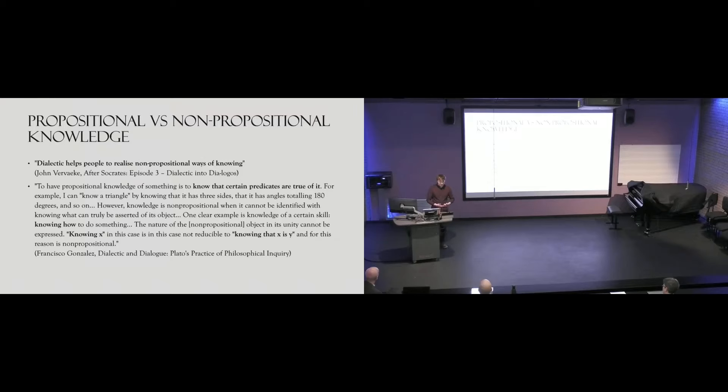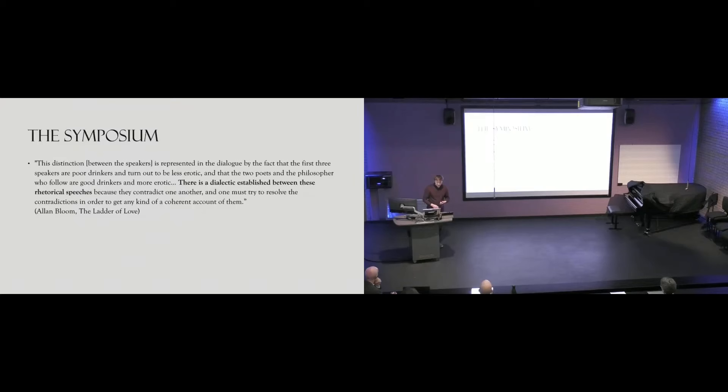Think about the subtext behind all of these speeches. There's a sort of unspoken attraction towards Eros which gets stronger as we progress through the dialogue. The Symposium is a philosophical drinking party. Accompanying this increasing attraction to the knowledge of love and wisdom is an attraction to drunkenness and bodily pleasure. The tension between these ideas will push and pull one another throughout the dialogue, like centripetal forces. These unspoken opposites encourage us to understand each speech dialectically. The first three speakers are poor drinkers and less erotic, while the two poets and the philosopher who follow are good drinkers and more erotic. There's a dialectic established because they contradict one another, and one must try to resolve the contradictions to get any coherent account.